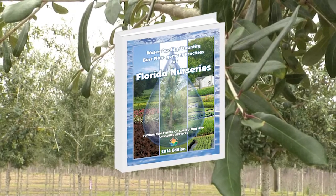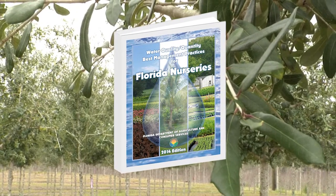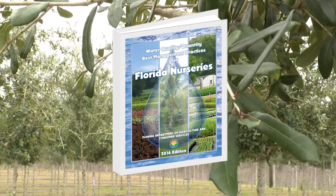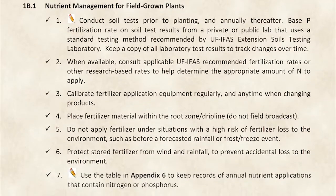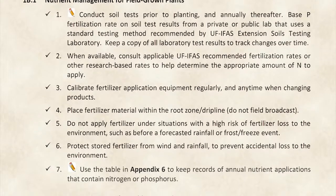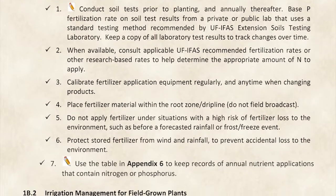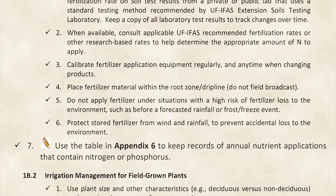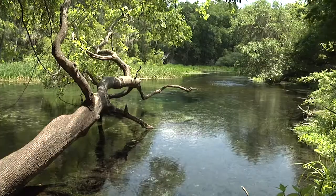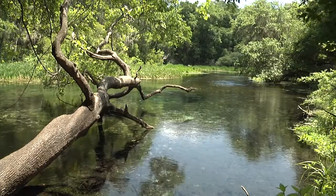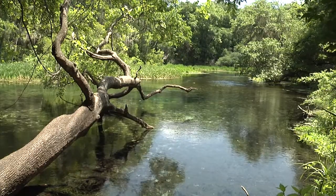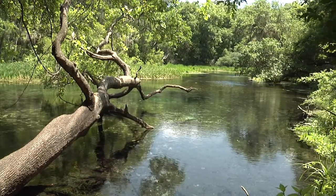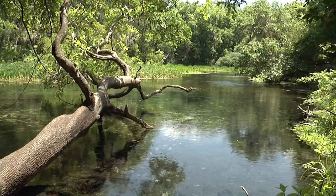Records of fertilizer applications are required when using BMPs. The primary function of these records is to document the amounts of nitrogen and phosphorus applied annually. Monitoring fertilizer amounts can help minimize applications and reduce the potential loading of nitrogen and phosphorus to natural waters.